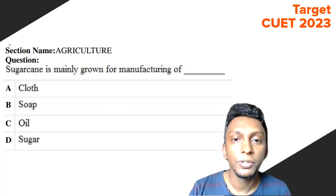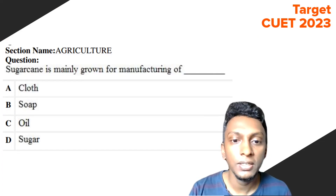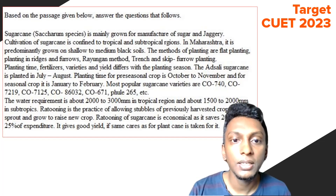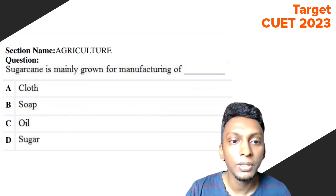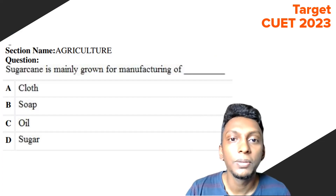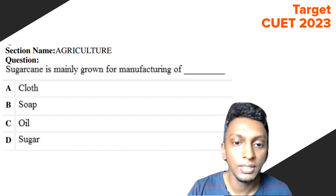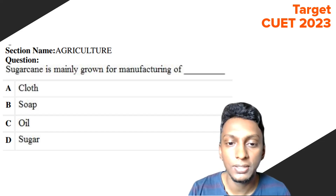Question 1: Sugarcane is mainly grown for the manufacture of? The answer will be Option D — sugar and jaggery. Sugar and jaggery is the correct answer.